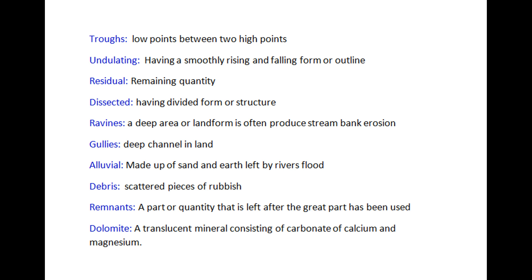Dissected: having a divided form or structure. Ravines: a deep and narrow landform, often produced by stream bank erosion. Gullies: deep channels inland. Alluvial: made up of sand and earth left by rivers and floods. Debris: scattered pieces of rubbish.